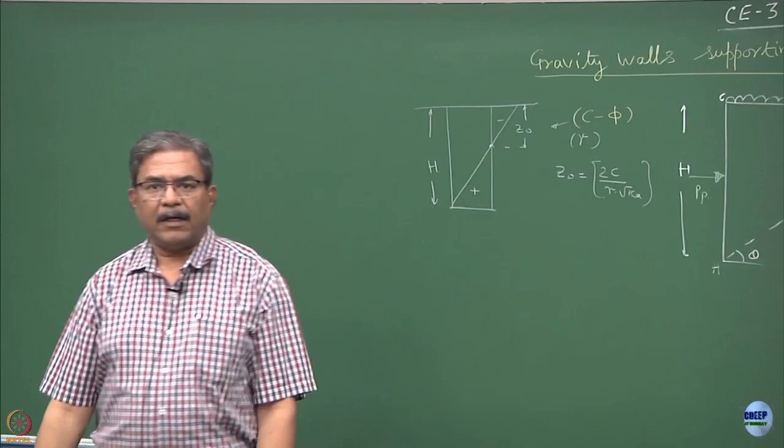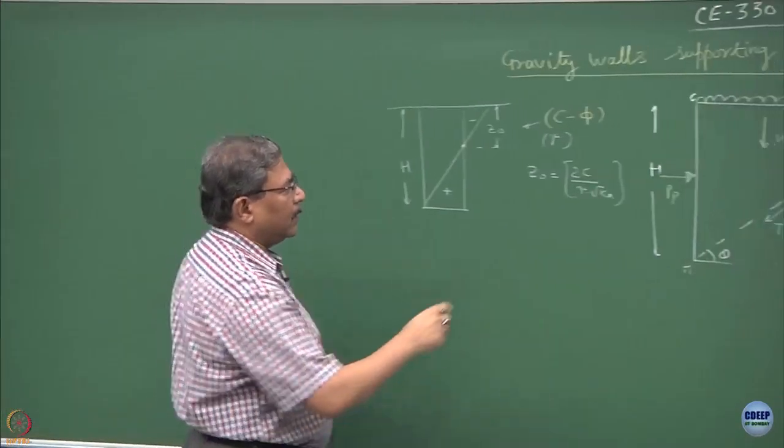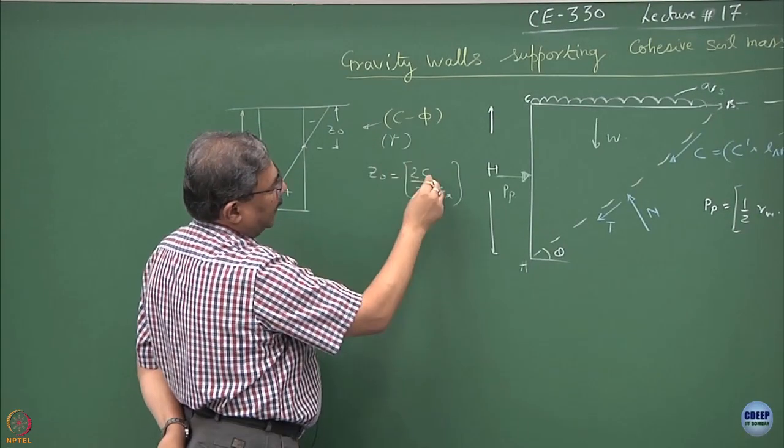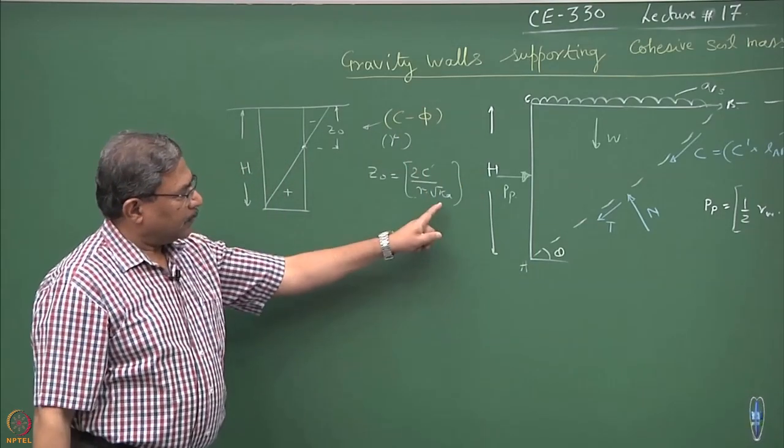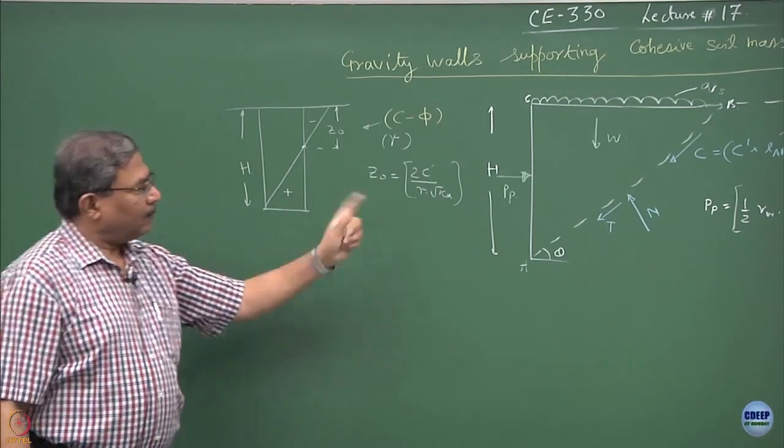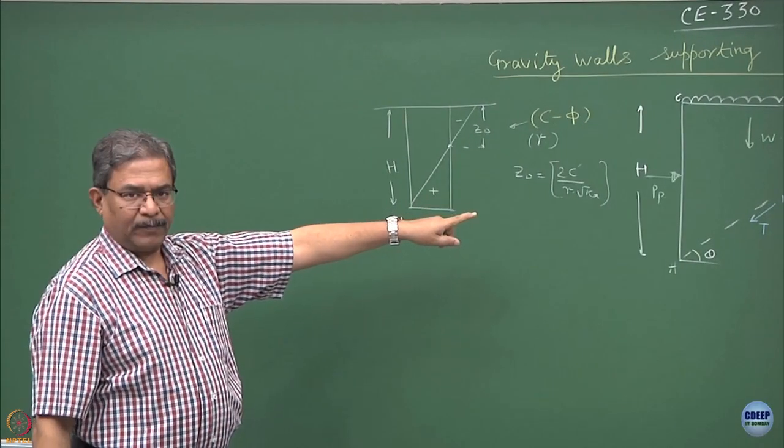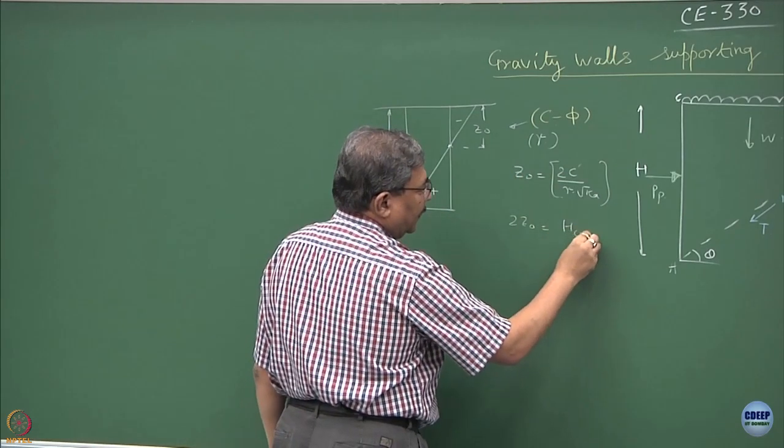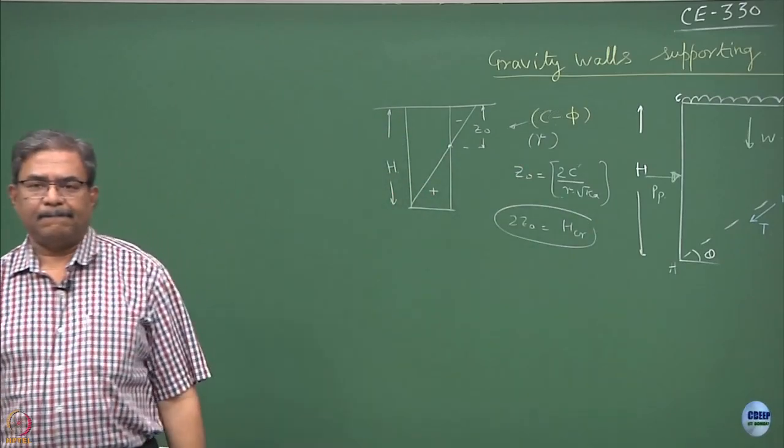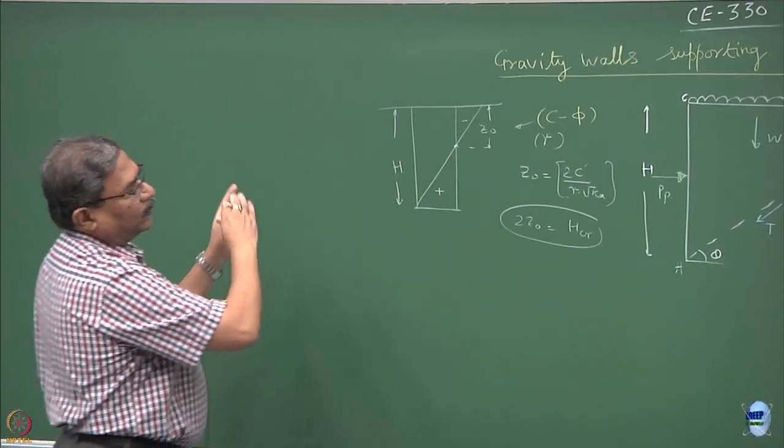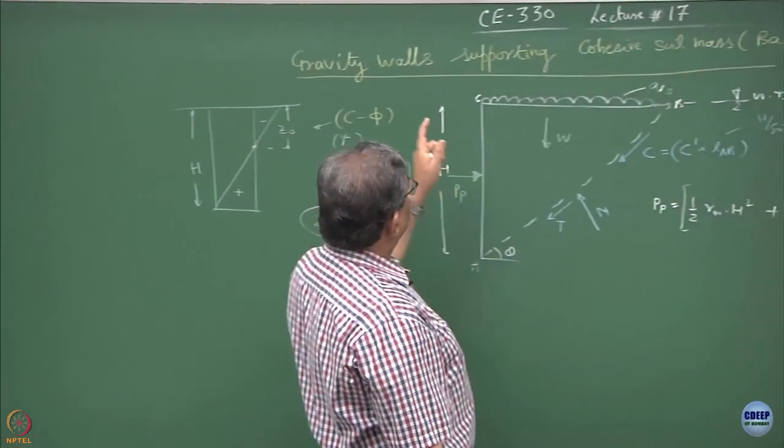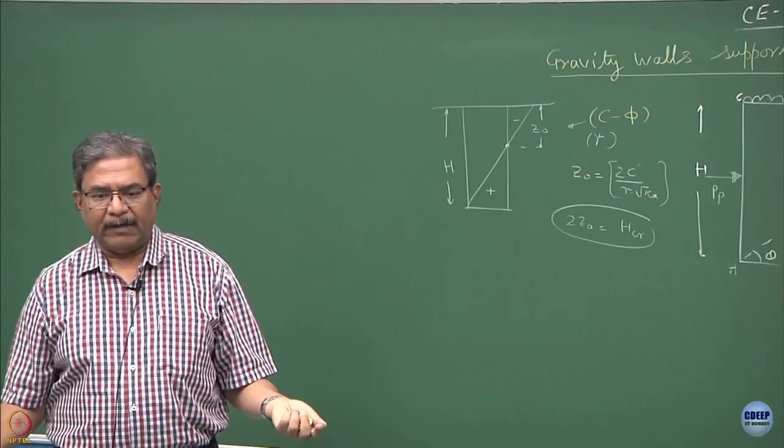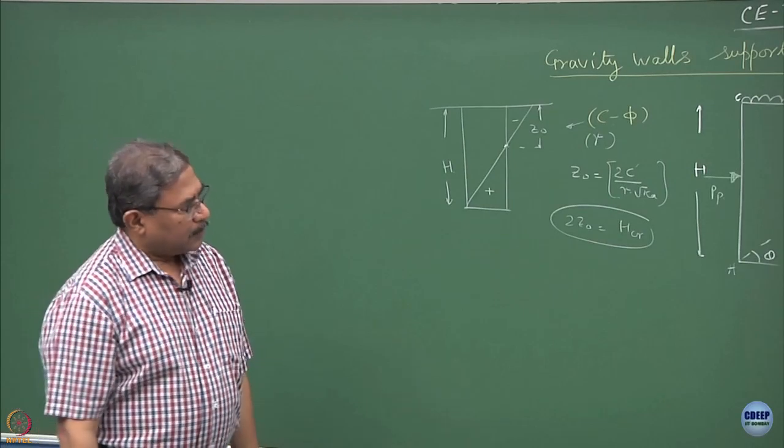Here the tension is prevailing, here the compression is prevailing in the soil mass. This is the solid and the z0 value we computed as 2c upon gamma root of ka. If you are working in pure cohesive soils, ka term disappears, this becomes 2c upon gamma. If you are working in a c-phi soil, this is the contribution of c, this is the contribution of phi in the form of ka. So, we get the value as 2c upon gamma root of ka and if I multiply this by 2, so 2z0 is equal to the critical height of unsupported cut. This concept we are now going to use for analyzing the stability of the walls for finding out active and passive earth pressures.